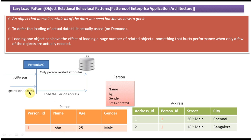If a get person address request comes, then we load the addresses along with the person. This is what the definition means: an object that doesn't contain all the data but knows how to get it. We defer the loading of actual data till it is actually asked — on demand.